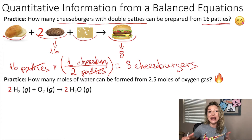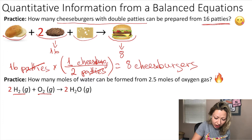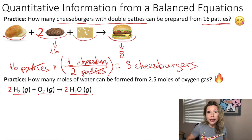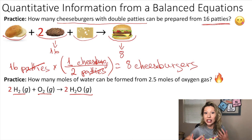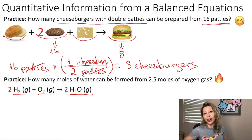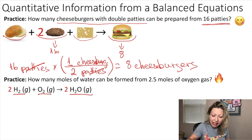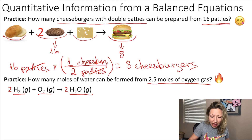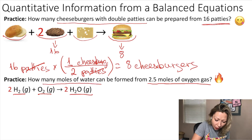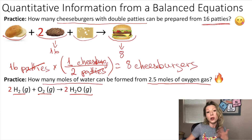Let's try to do the same thing in a chemical reaction. In this reaction, we have hydrogen gas and oxygen gas forming water in the gas phase. This reaction is actually one of my favorite demonstrations in in-person classes, as hydrogen gas produces beautiful flames. However, you need to be very careful because hydrogen gas is highly flammable. We are given that we have 2.5 moles of oxygen gas, and we have to calculate how many moles of water can be formed from 2.5 moles of oxygen gas.